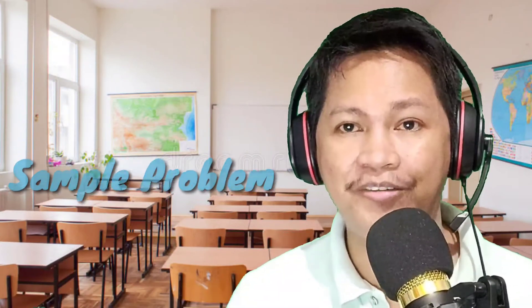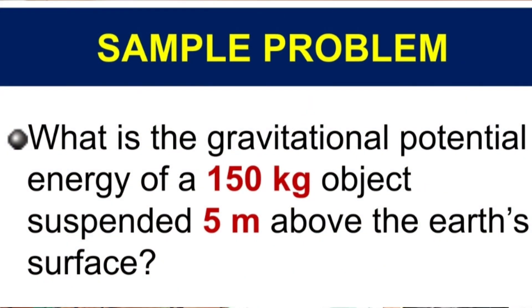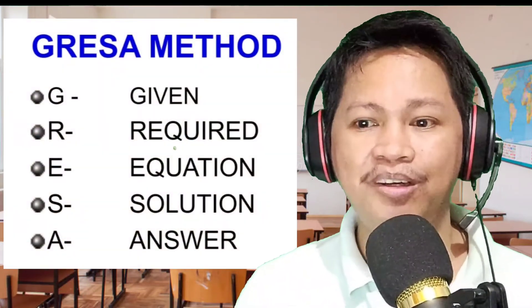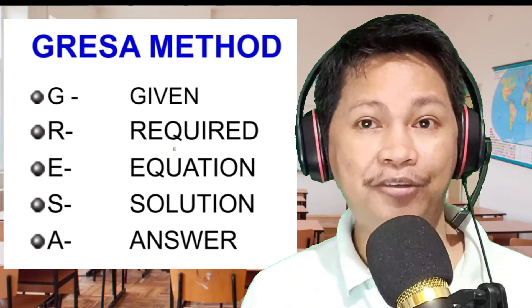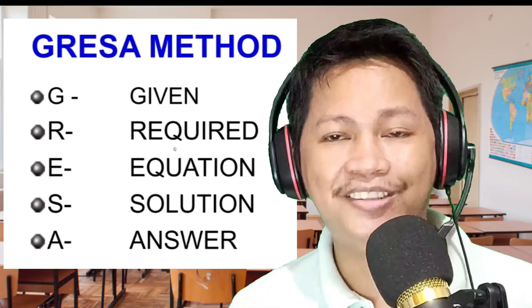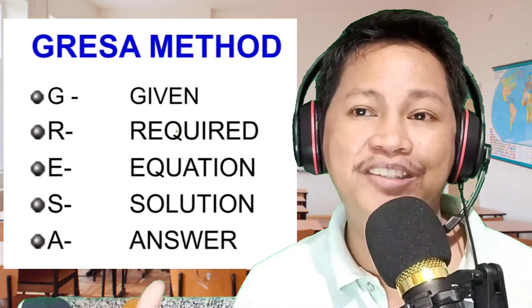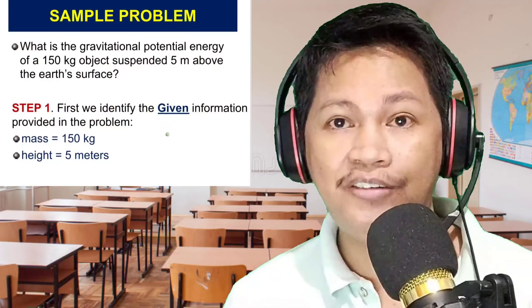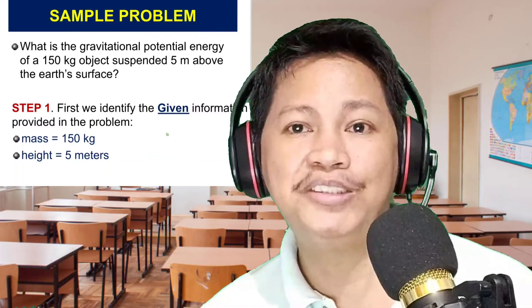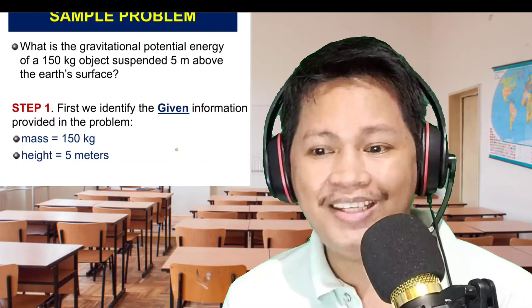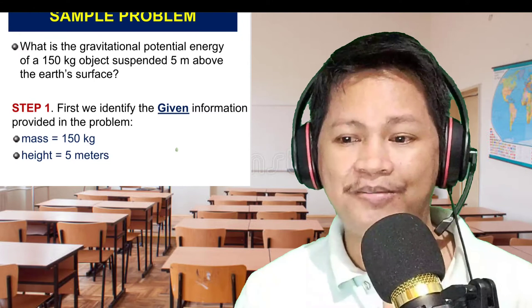Now let's proceed to answering a sample problem. Problem 1: What is the gravitational potential energy of a 150-kilogram object suspended five meters above the Earth's surface? We will use the GRESSA method — G for Given, R for Required, E for Equation, S for Solution, and A for Answer. Step one: identify the given information. From the problem, mass equals 150 kilograms and height equals 5 meters.